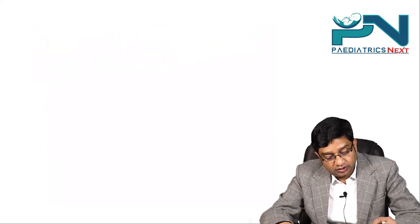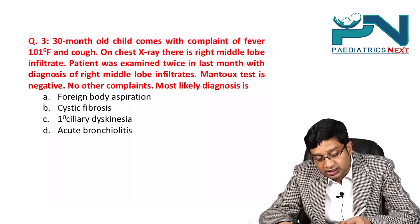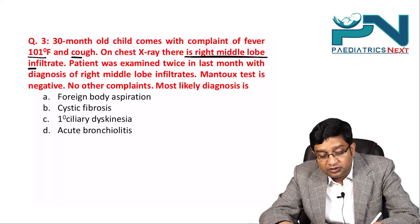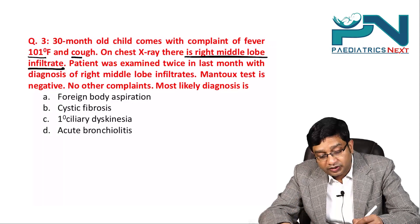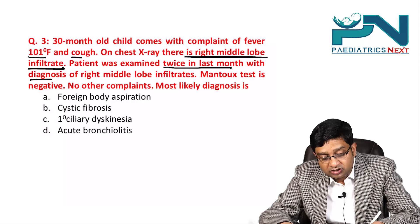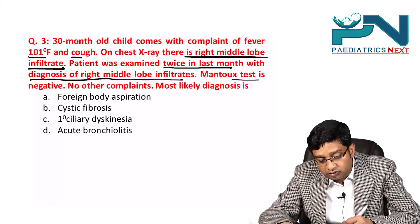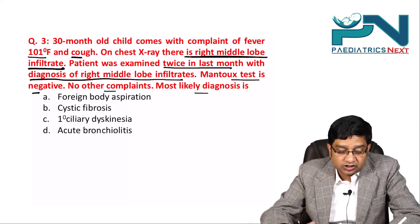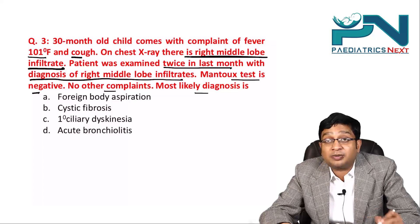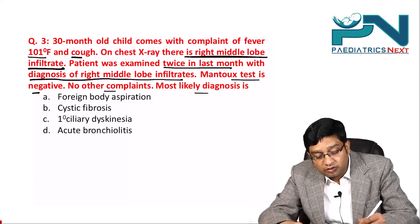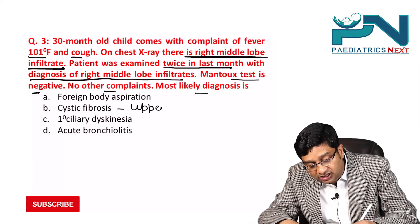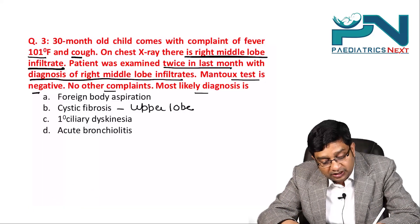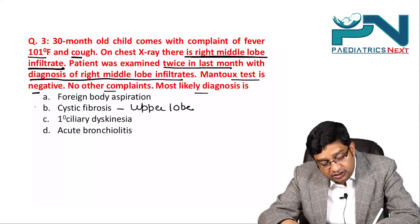Question 3: A 30-month-old child presents with fever and cough. Chest X-ray shows right middle lobe infiltrate. The patient was examined twice in the last month with the same diagnosis. Mantoux test is negative. Cystic fibrosis is ruled out because it mainly affects the upper lobes and affects both lungs.